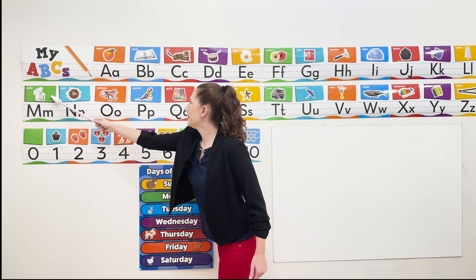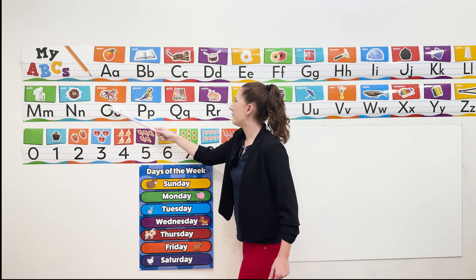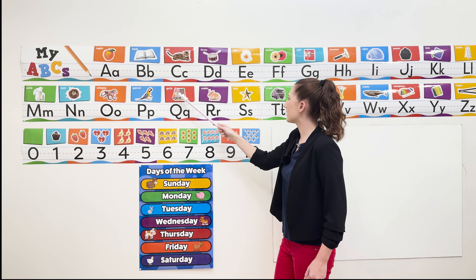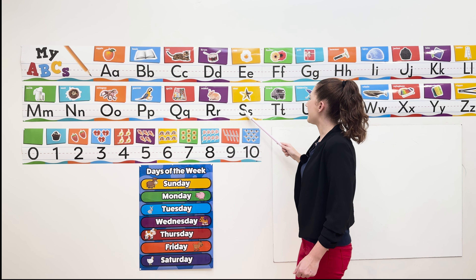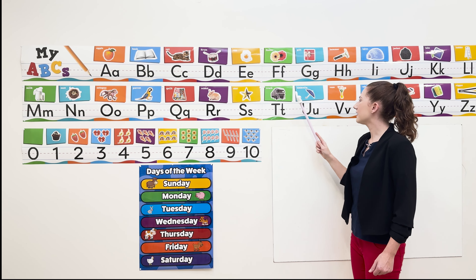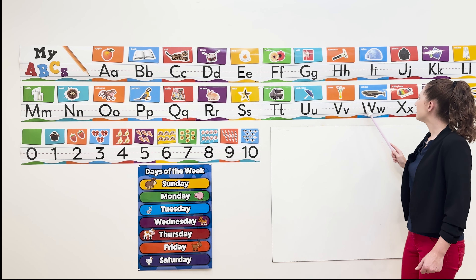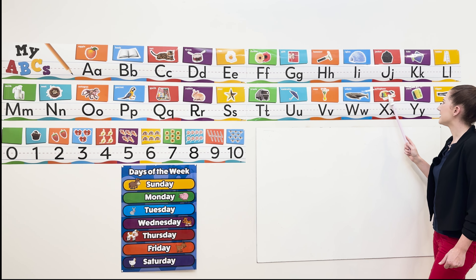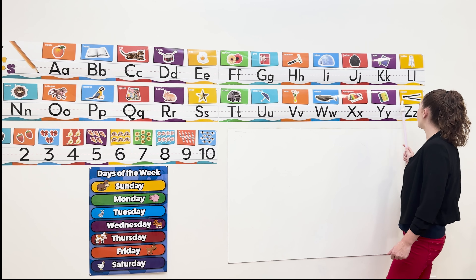M for Milk, N for Nest, O for Octopus, P for Pear, Q for Quill, R for Rabbit, S for Star, T for Truck, U for Umbrella, V for Vase, W for Whale, X for Xylophone, Y for Yarn, and Z for Zipper.